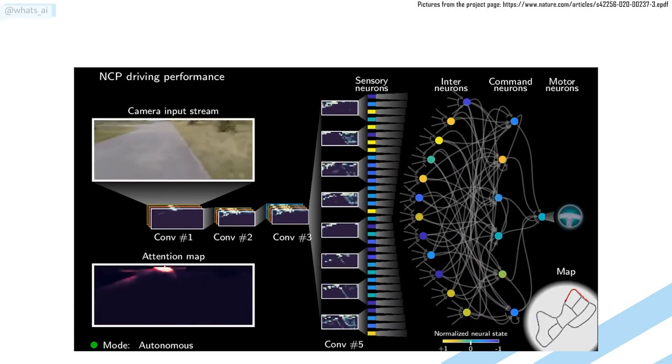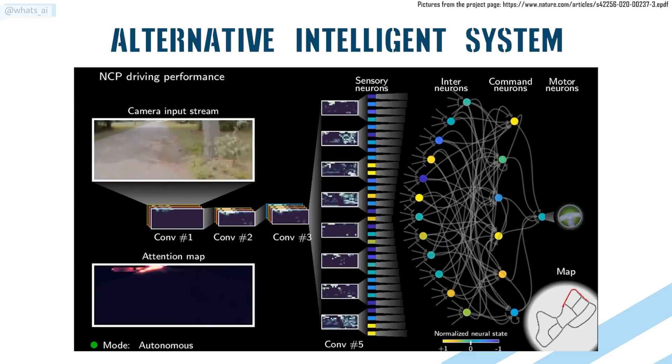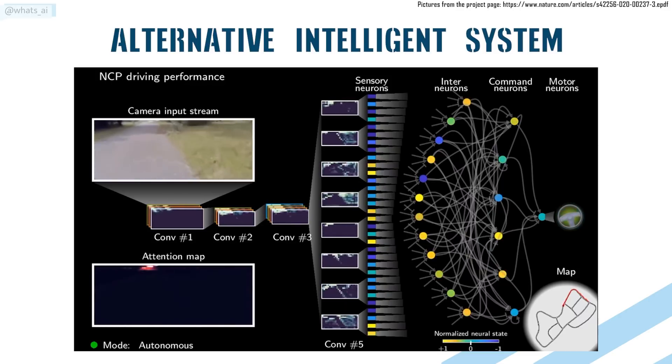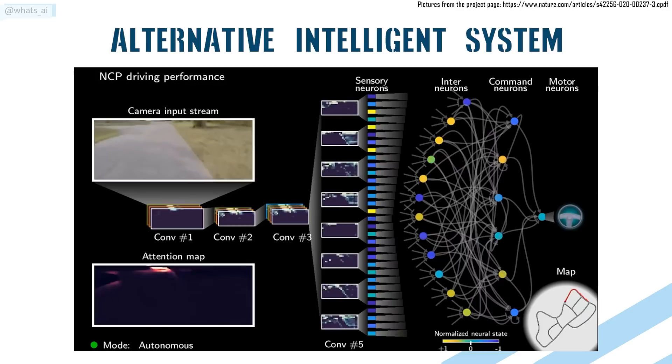A team at IST Austria and MIT designed an alternative intelligent system that learns to drive a car autonomously. It uses camera signals as inputs and controls the car using only 19 control neurons, imitating the nematode's nervous system to process information efficiently. This new intelligent system is more robust, more interpretable, and faster to train than current deep neural network architectures with millions of parameters.